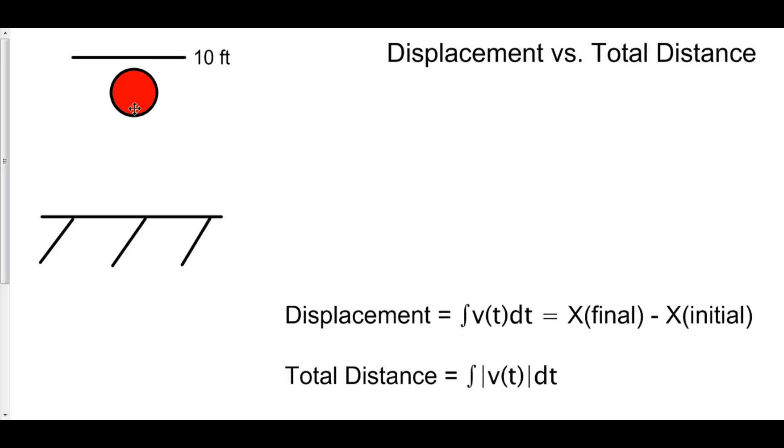However, once the ball comes back down, the displacement is now zero. Because the ball started at zero and it ended at zero. It doesn't matter how far it went. It just matters where it ended up relative to where it started. So the ball is now at zero. It started at zero, and so zero minus zero, its displacement is zero.